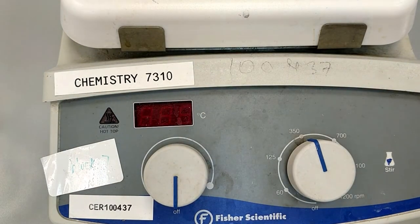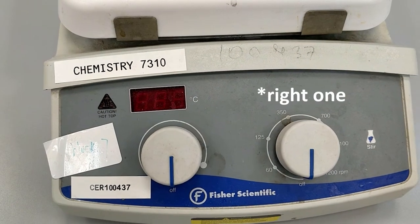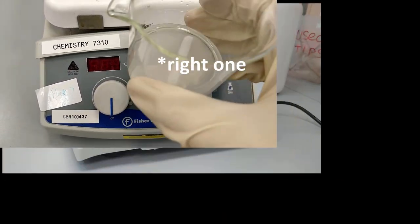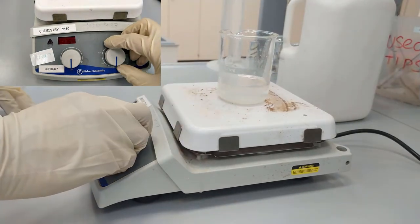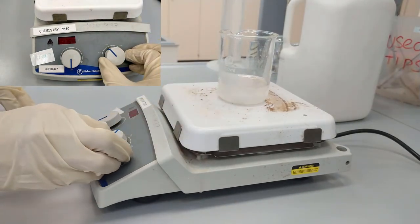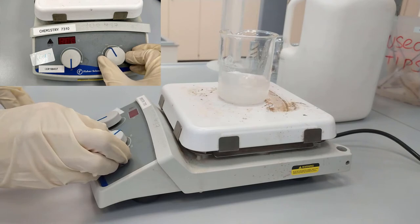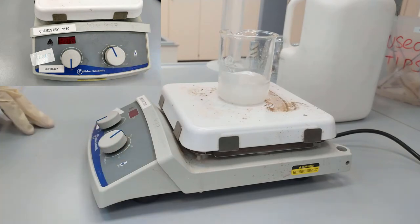And here you can see the two knobs. The left one shows the temperature, so it is the heater. The right one shows the RPMs or rotations per minute. So you place the beaker on the stirrer and set the appropriate rotations per minute.